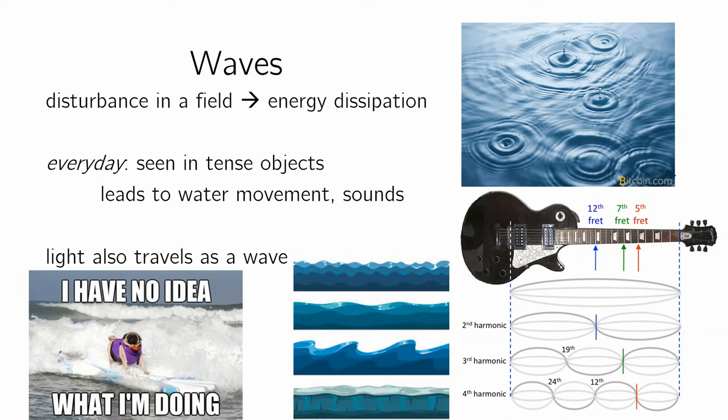You can also think of a standing wave — like in a guitar. If you pluck a guitar, you create a wave that stays in place; it oscillates back and forth and the energy is dissipated as sound. So you can see waves in a lot of different things: sound, light, or movement. And we'll really focus here today on light.